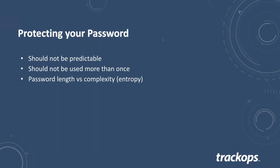The strength of a password is ultimately determined by its entropy, and the main component of a password's entropy is its length. It used to be thought that a complex password didn't need to be long, but that's not necessarily true anymore. A six-character password versus a 12-character password is a huge difference. By default passwords in TrackOps are set to eight characters, but I would encourage you to lengthen that to at least 12. My ultimate suggestion would be somewhere around 20.